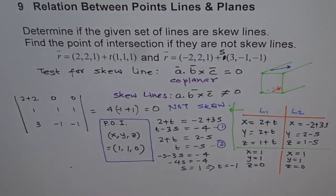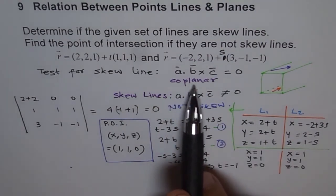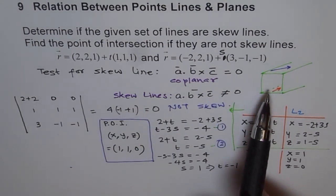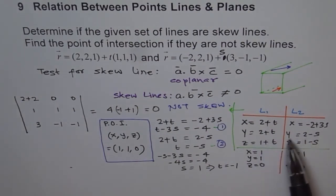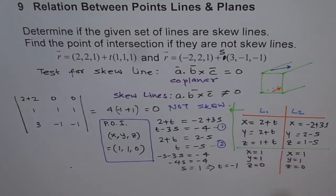To summarize: two lines which may not be parallel may still not intersect — these are called skew lines. The acid test for whether lines are skew is the scalar triple product A · (B × C). If it equals zero, the lines are coplanar and, if not parallel, they will intersect. To find the point of intersection, convert vector equations to parametric form and equate the X, Y, and Z values. Our point of intersection was (1, 1, 0). Thank you.